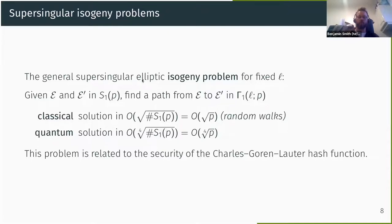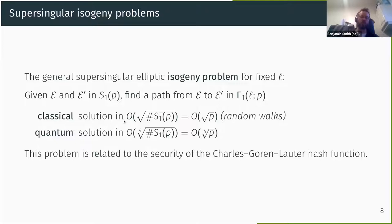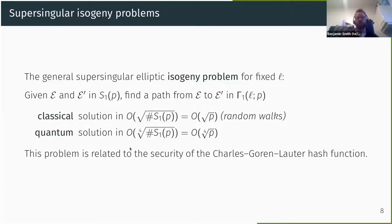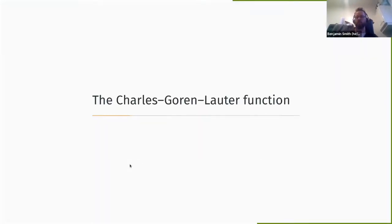The interesting algorithmic problem for us today is the isogeny problem: computing an isogeny between two curves known to be isogenous, where the degree is fixed to be a power of L. Given two elliptic curves E and E′ in this vertex set, just find a path between them. There's a classical solution based on random walks — square-rooting the search space — so with about P/12 vertices, we're looking at about √P steps. There's also a quantum solution that's the square root of that again, giving roughly a fourth root of P.